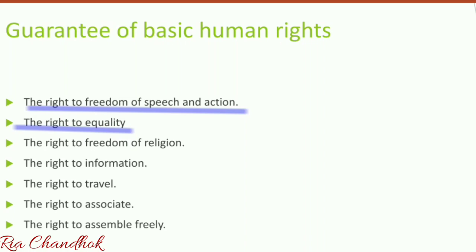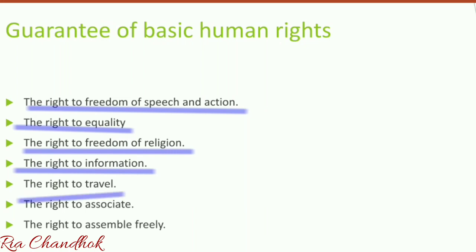The right to freedom of religion means citizens can choose their own religion and practice it as they see fit. The right to information means each person has a right to know what is happening in the country and the world, with no censorship of information. The right to travel and settle means everyone can travel anywhere and settle in any part of the country. The right to associate includes forming and joining organizations of one's own choice and assembling freely to protest government actions. However, everyone has an obligation to exercise these rights peacefully, with respect for the law and the rights of others.